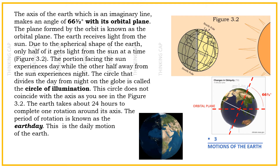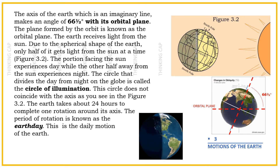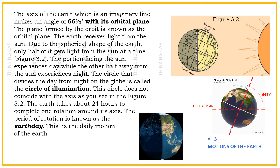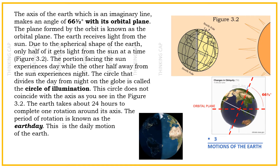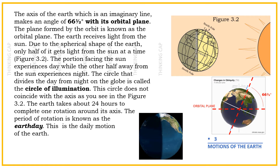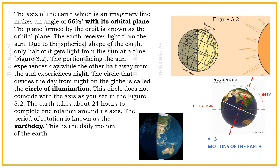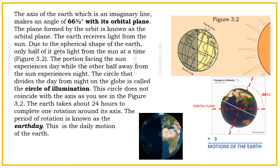The plane formed by the orbit is known as the orbital plane. The Earth receives light from the Sun. Due to the spherical shape of the Earth, only half of it gets light from the Sun at a time. The portion facing the Sun experiences day while the other half away from the Sun experiences night. The circle that divides the day from night on the globe is called the circle of illumination. This circle does not coincide with the axis, as you see in the figure.